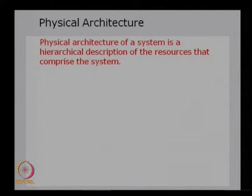Physical architecture of a system is a hierarchical description of the resources that comprise the system. Basically, we look at the physical resources that provide the functions in the system. The architecture is written as a hierarchical structure describing each physical resource or physical element that provides the necessary functions in the system.